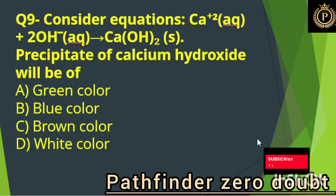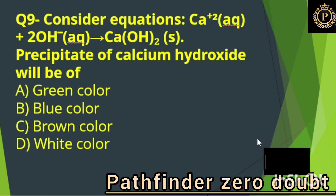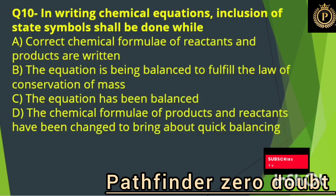Consider the equation Ca + 2OH → Ca(OH)2. The precipitate of calcium hydroxide will be: Option B/D, white.